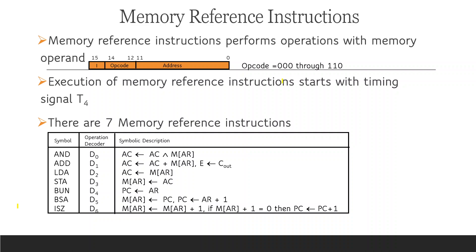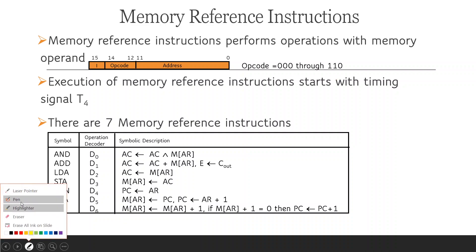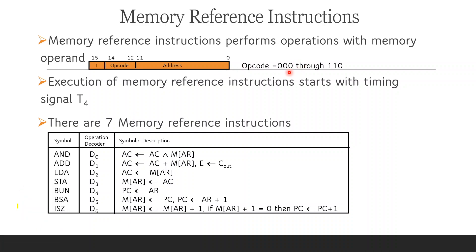The opcode is the main function identifier, ranging from 0,0,0 to 1,1,0. The timing signal runs from T0 to T15 via the sequence counter. Execution of memory reference instructions begins at timing signal T4. There are 7 types of memory reference instructions.